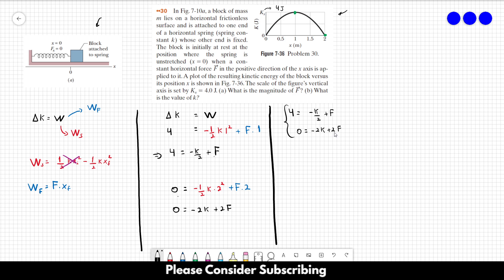So let's first find F. So I'm going to isolate K from this equation over here. So from this equation, we will find that K is equal to F. So replacing this in the first equation, we have that 4 is equal to minus F over 2 plus F. So we have that 4 is equal to F over 2. That means that F is equal to 8 newtons.